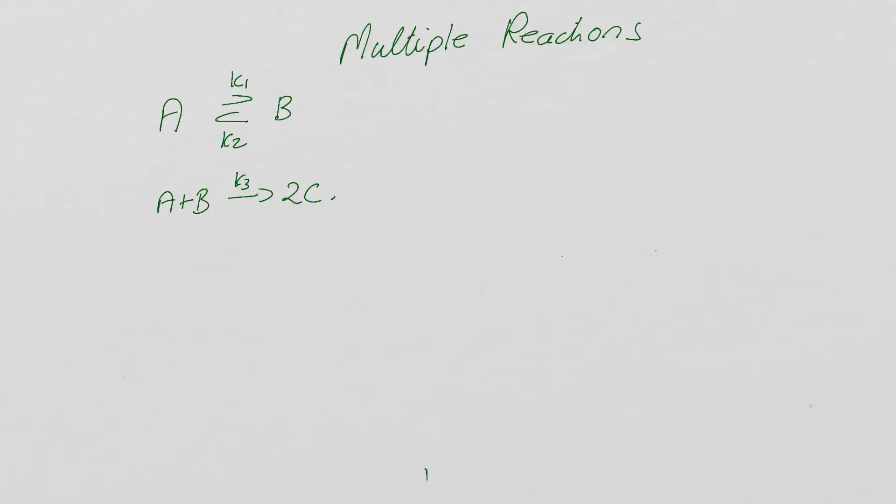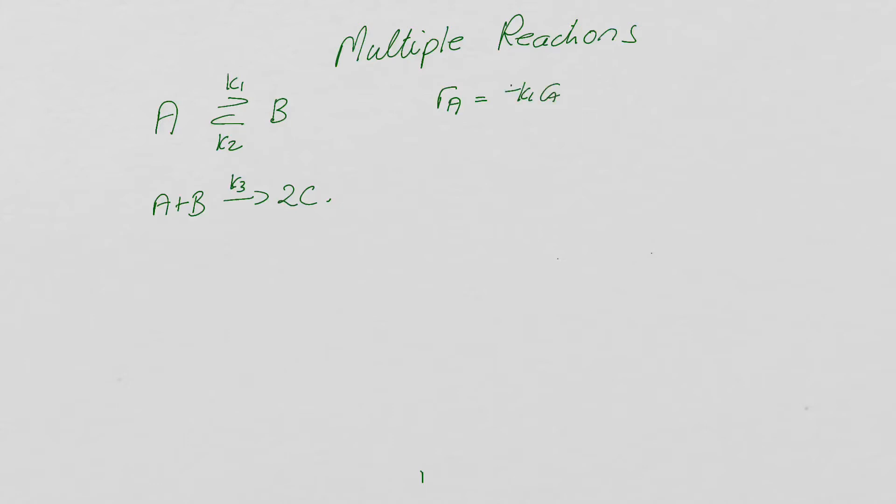The first question we can ask is what is the relationship between K1 and K2 and the equilibrium constant? If we just look at this first reaction, we could write that the rate of A for this reaction would be minus K1 Ca plus K2 Cb, and at equilibrium that would equal zero.